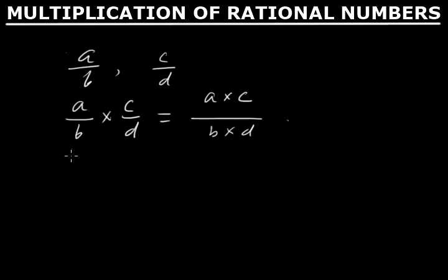So how to multiply 3/5 and 7/2? We'll write 3 times 7 and 5 times 2, so 21/10.